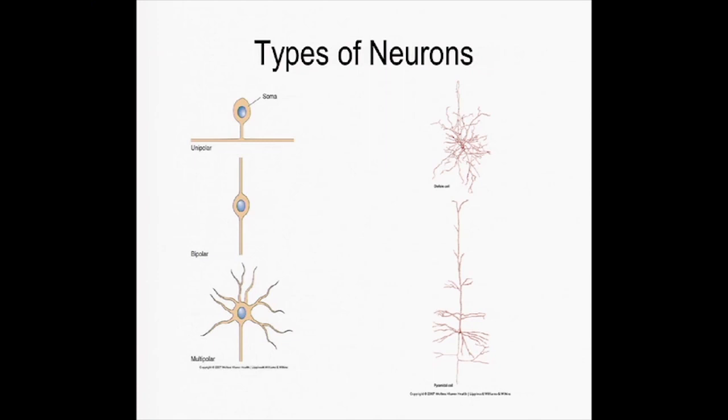And then there are bipolar, where you have dendrites just going off in two directions. And then you have these what are called unipolar, where you have the soma and a dendrite which is sort of just going past. It actually doesn't go through the soma.